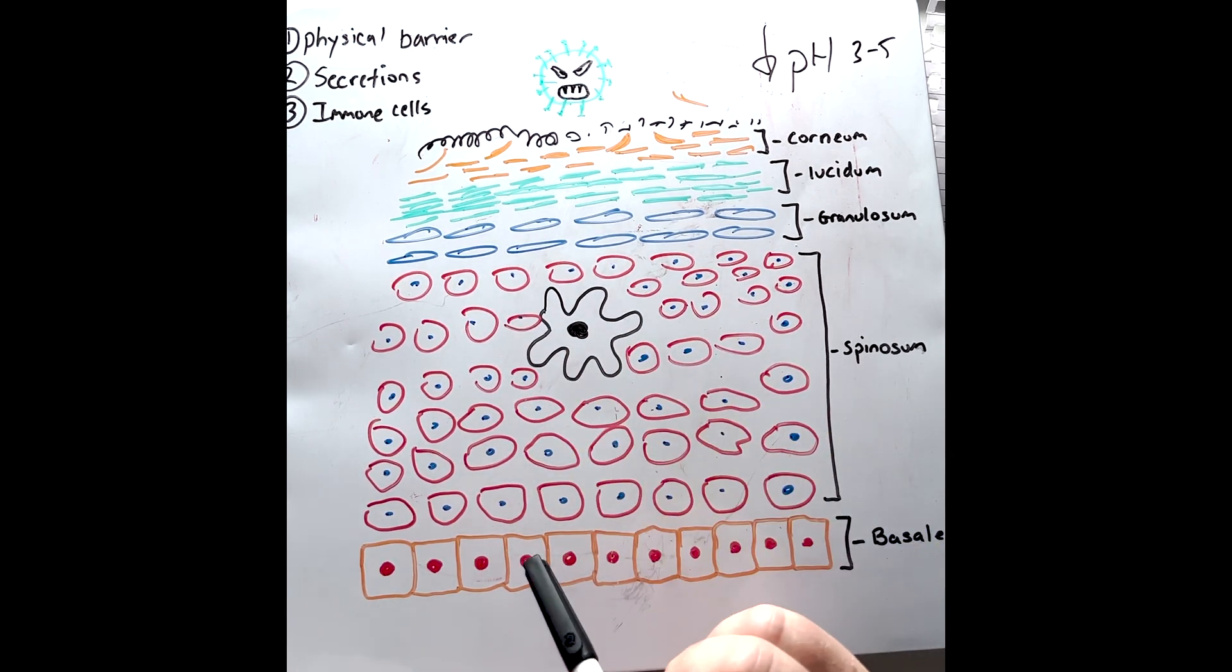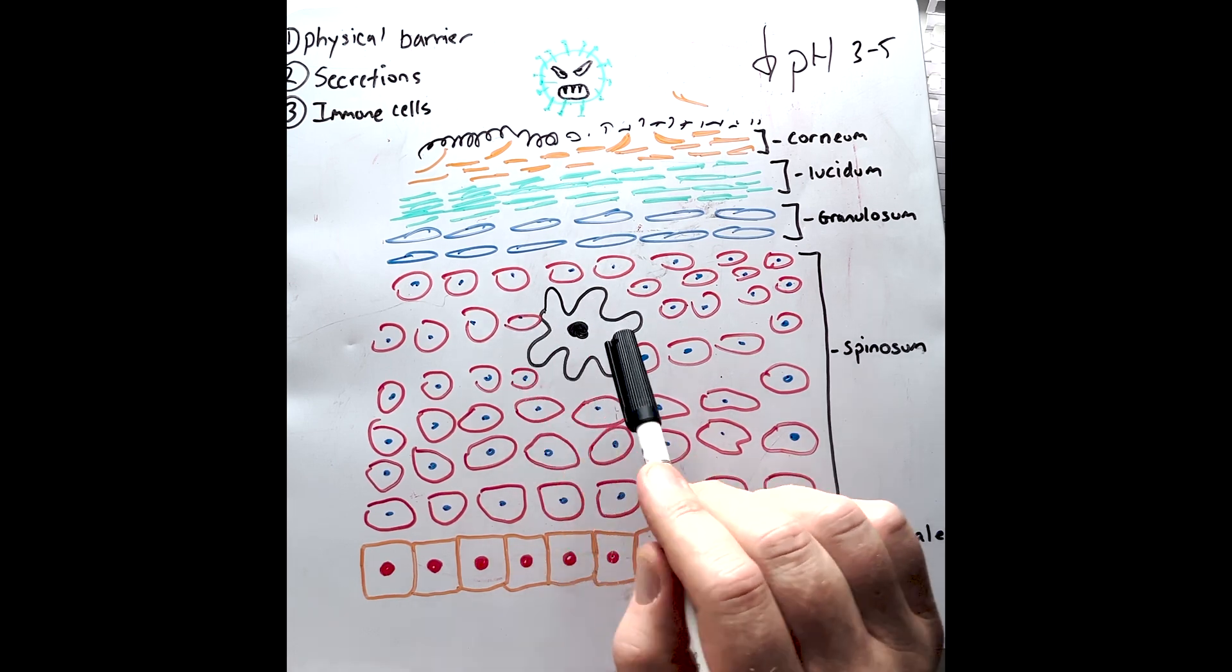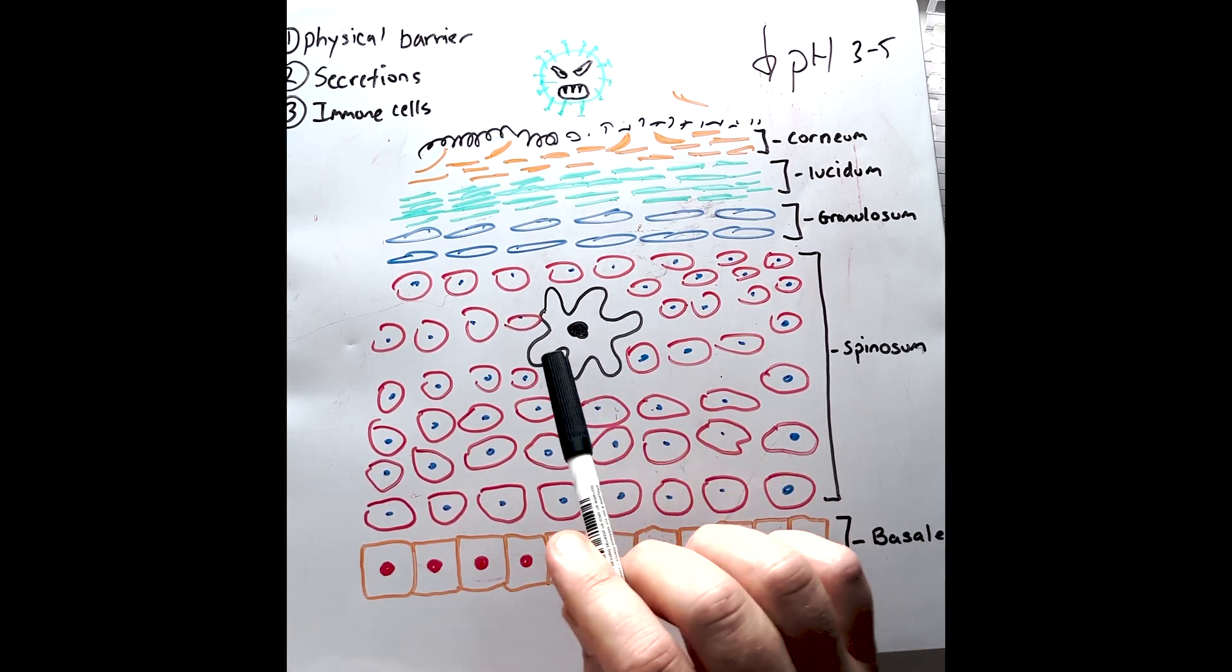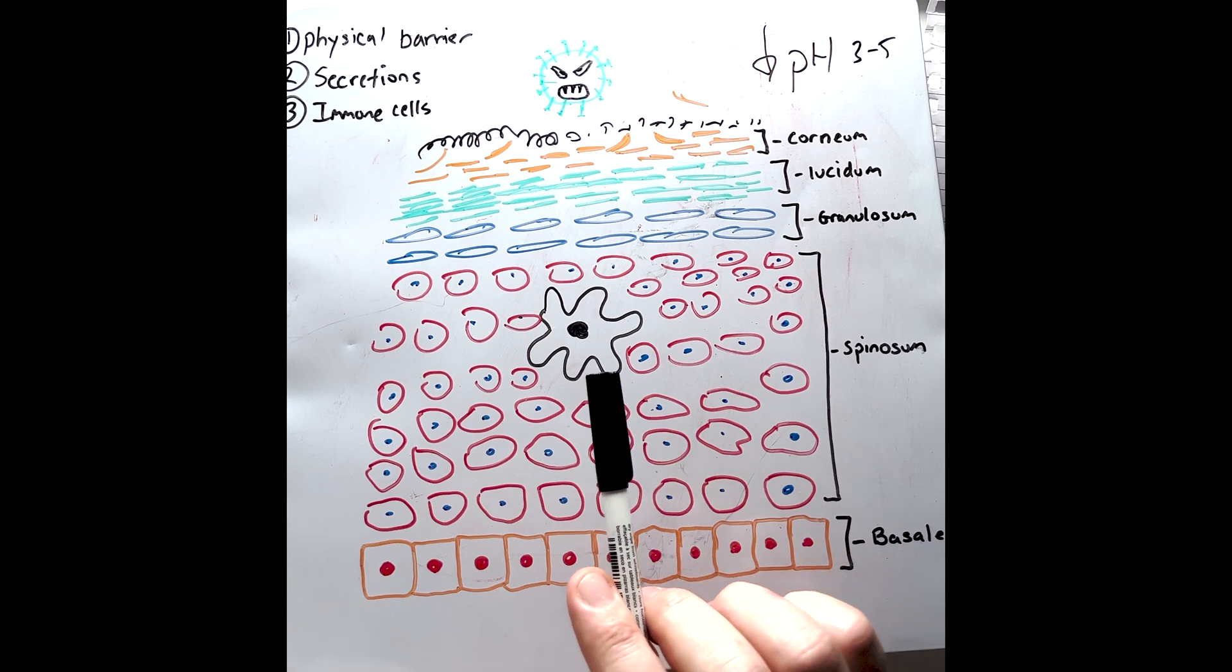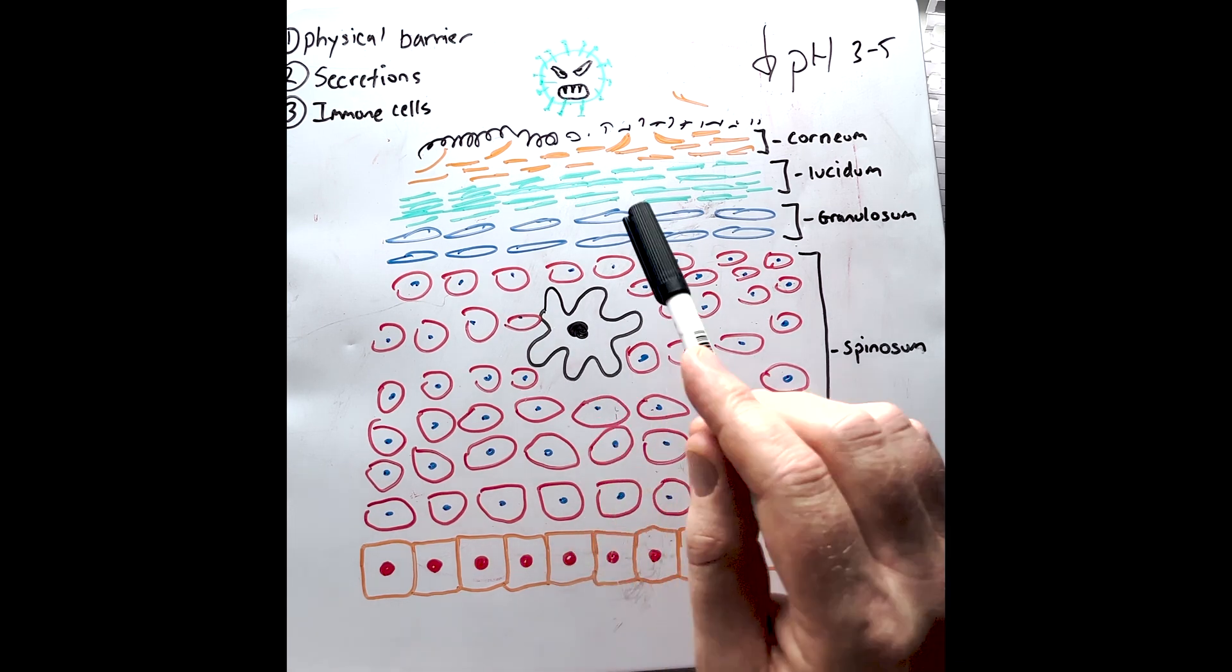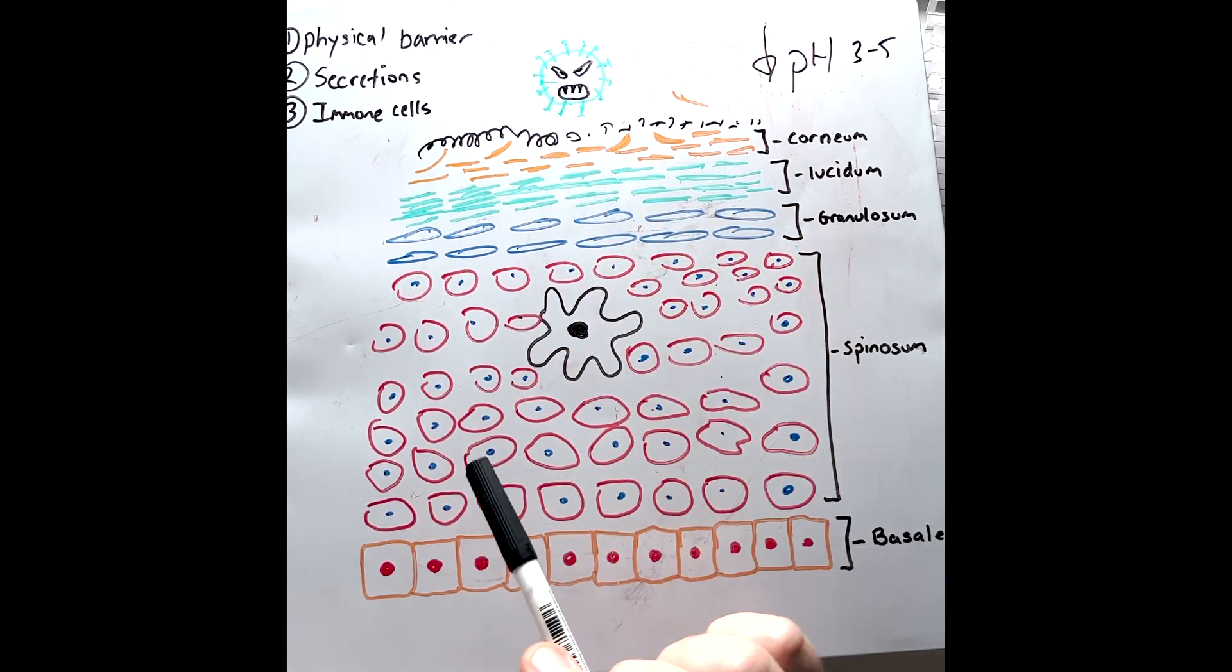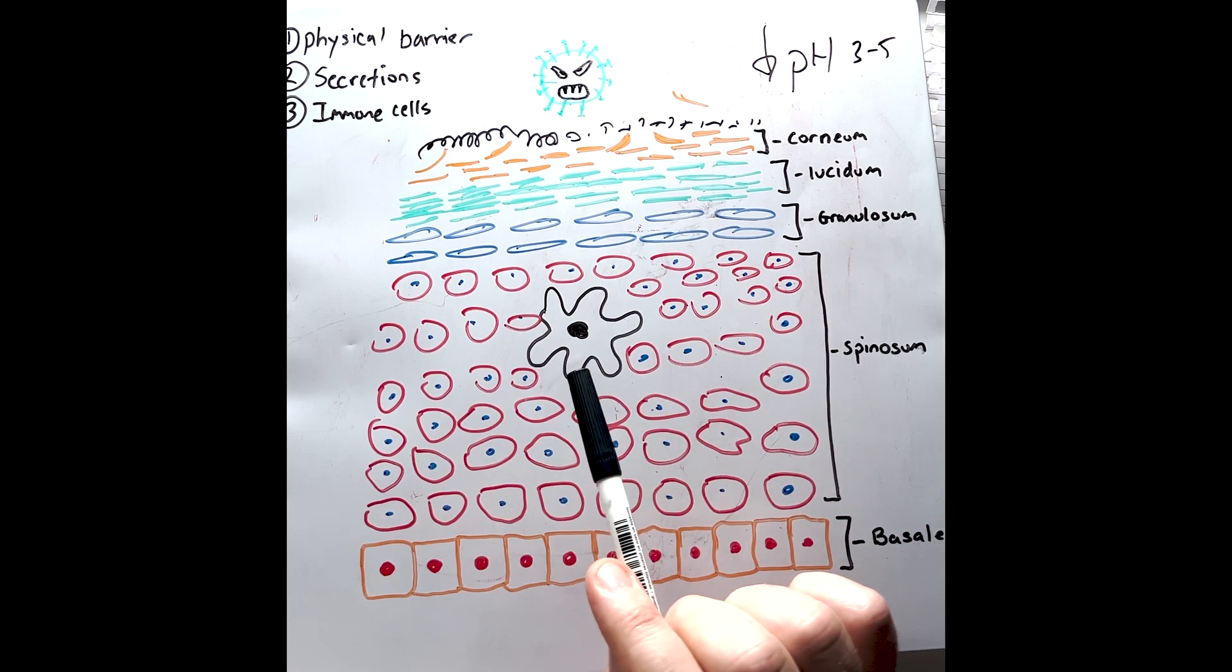Finally, there's a specialized immune cell, which is like a type of resident macrophage. These are known as Langerhans cells. These cells act as the outer guards of the immune system and are the first to respond to any possible pathogenic breach that goes into the epidermis.